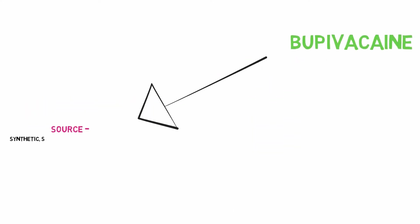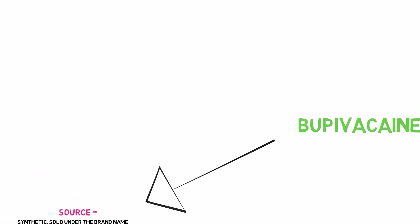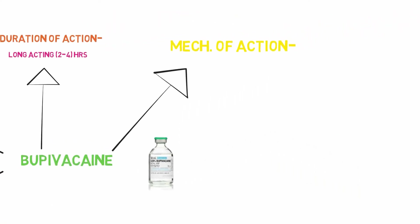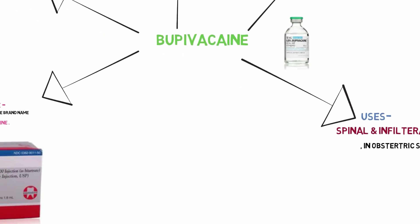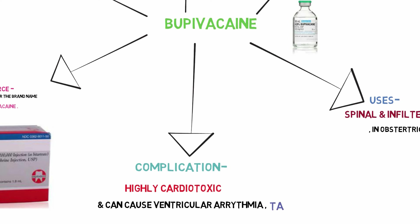Bupivacaine. Source: synthetic, sold under the brand names Marcaine and Sensorcaine. Type: amide-linked local anesthetic. Duration of action: long-acting, 2 to 4 hours. Mechanism of action: same as local anesthetics. It produces analgesic action without motor blockage. Uses: spinal infiltration and nerve block anesthesia, and in obstetric surgery. Complications: highly cardiotoxic and can cause ventricular arrhythmia and tachycardia.